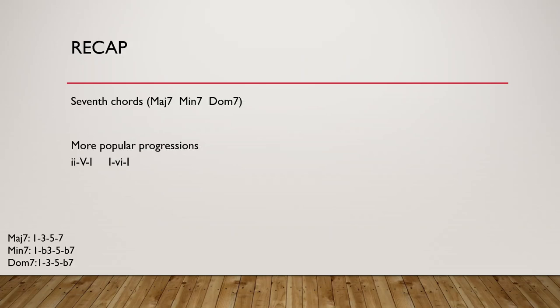That's today's lesson. We talked about 7th chords: major 7th, minor 7th, and dominant 7th. You have to remember the formulas to make them — 1, 3, 5, 7 for major 7; with minor we flatten the 3rd and 7th notes; and dominant 7 is 1, 3, 5, flat 7. We also talked more about popular progressions — we added 2-5-1, the most important jazz progression hands down, and 1-6-1, because it sounds really chill.